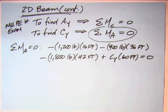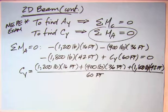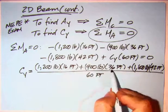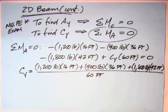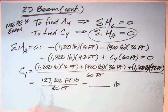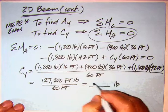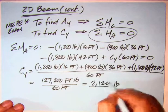Writing this out, we've got the three forces, all negative: 1,200 times 16 feet, 900 times 36 feet, minus 1,800 times 42 feet, and then the positive moment of CY times 60 feet. I do algebra first, then arithmetic, and then check. I take all the terms that I know: 1,200 times 16 plus 900 times 36 plus 1,800 times 42, all divided by 60. I multiply everything out, get the number 127,200 foot-pounds divided by 60 feet. The feet cancel and you get pounds. Do all that out in my calculator and get a number like 2,120 pounds for CY.